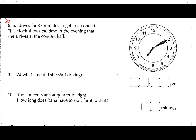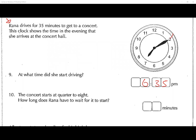Rana arrives at the concert hall in the evening. At what time did she start driving? The answer is 6:35. We go back 35 minutes — five, ten, fifteen, twenty, twenty-five, thirty, thirty-five — so that would be 6:35. Each jump back is worth five minutes.